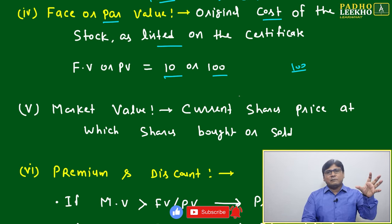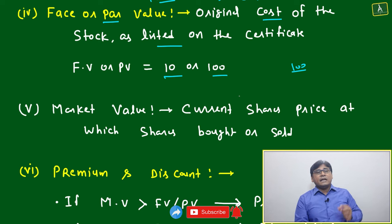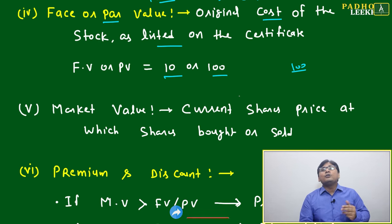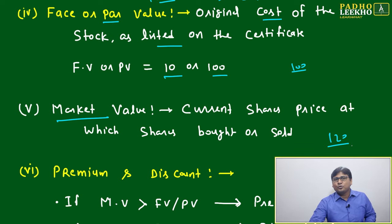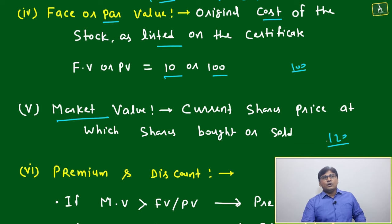After one year, that share value will become 120 rupees. That 120 rupees we call market value. Means if you want to purchase the share of that company after one year of releasing, you have to purchase at 120 rupees, not 100 rupees. That is called market value. At present, what is the market value?